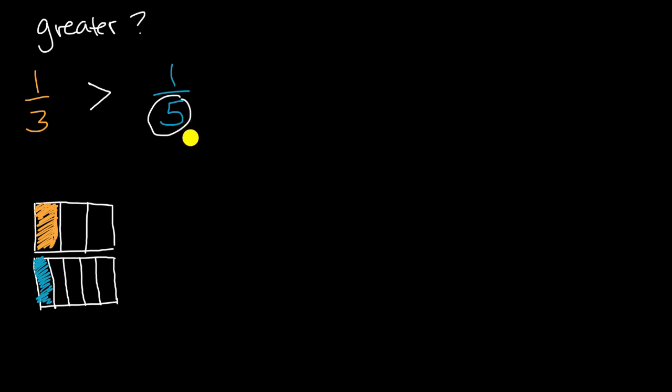And that is generally true, that the larger the denominator, the smaller the fraction is going to be. Why is that? Because you're dividing your whole into more equal chunks. So if you're only dividing into three, if it's one-third of the whole, or if it's one of three equal chunks of the whole, it's going to be bigger than one of five equal chunks of the whole.